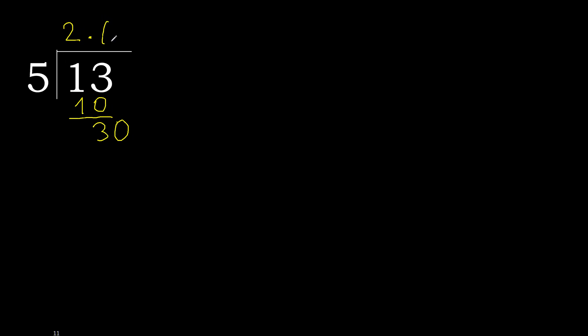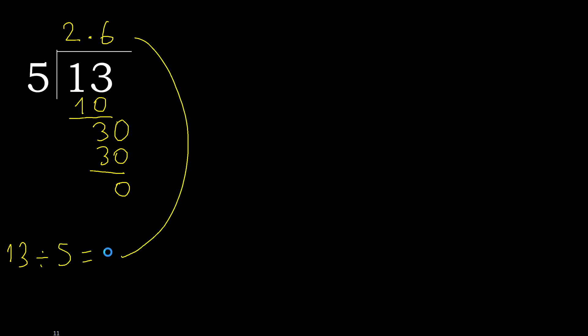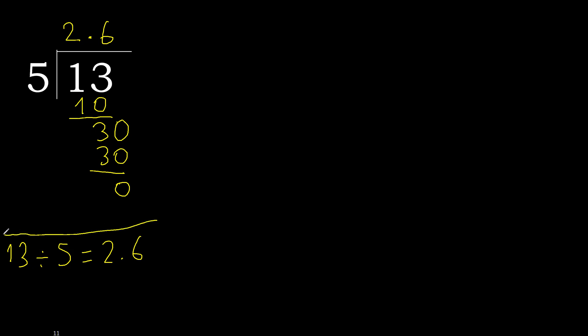So we have 30. 5 multiplied by 6 is 30. 30 minus 30 is 0 — therefore finish. Therefore, 13 divided by 5 equals 2.6. Finish: 2.6. Thank you.